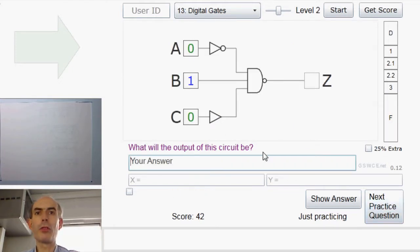Another one you have to think through. The output of the circuit. This is a NAND gate. A NAND gate is only 0 when all of its inputs are 1. Are they all 1? No. This one is a 0. Therefore, the output of the NAND gate will not be 0. It will be 1.